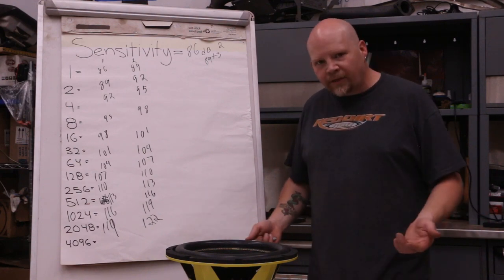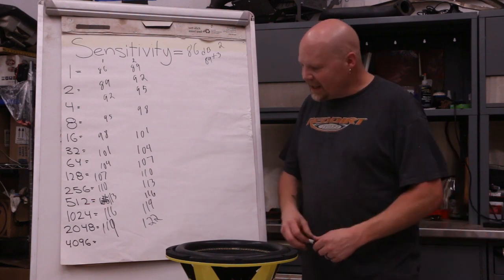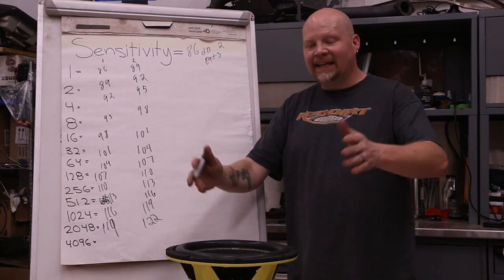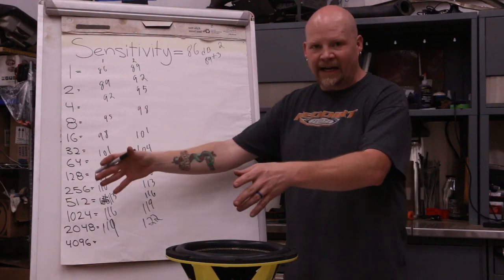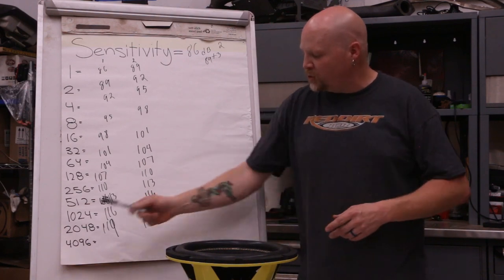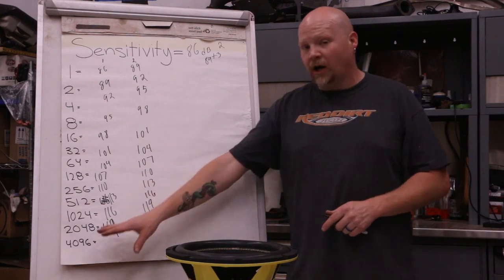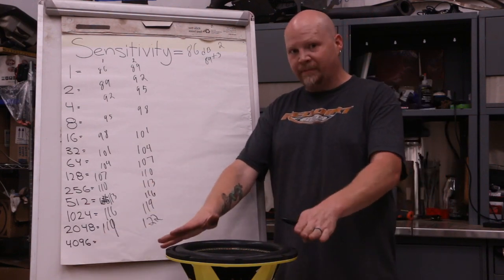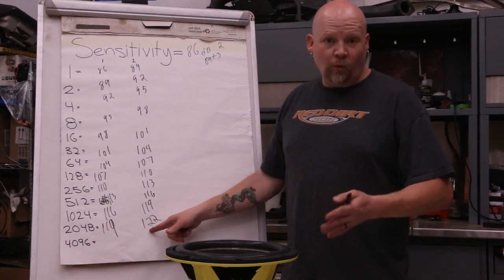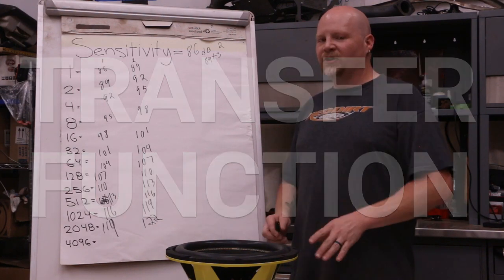Our target is 2,000 watts, and on a single subwoofer that gets you 119 dB; two subs gets you 122 dB. You may be wondering 'I had two 10s and I was hitting 130 - that doesn't make sense.' That's because we're not finished yet. This is your base - this is if you have this subwoofer sitting in the middle of a field or an anechoic chamber with no enclosure at all and you put 2,000 watts to it.